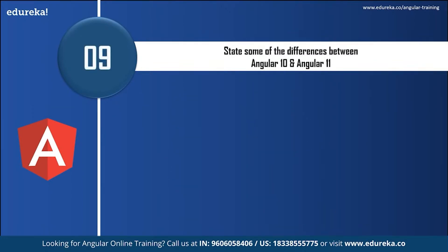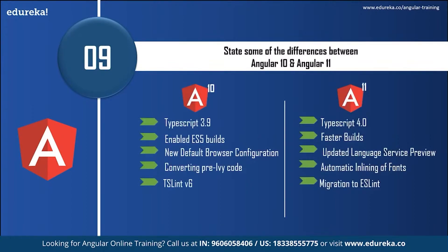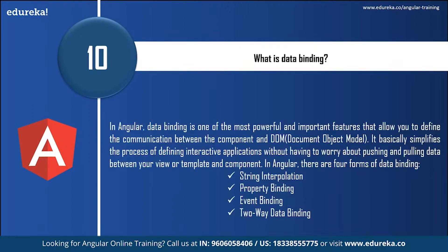What are the differences between Angular 10 and Angular 11? Angular 10 uses TypeScript 3.9 while Angular 11 has upgraded to TypeScript 4. Angular 10 uses enabled ES5 builds but Angular 11 uses faster builds. Angular 10 has a default browser configuration while Angular 11 upgraded to language service preview. Angular 10 converted pre-Ivy code and Angular 11 uses automatic inlining of fonts. TSLint version 6 is used by Angular 10, but there is a migration to ESLint in Angular 11.